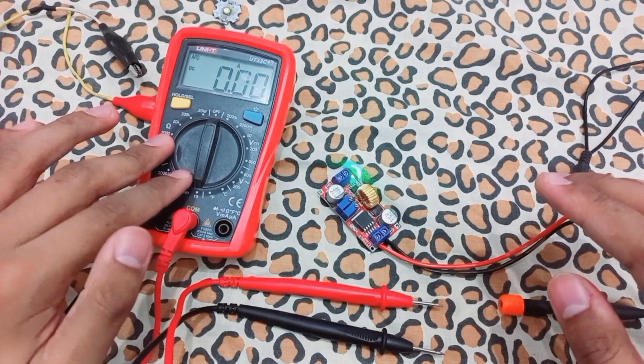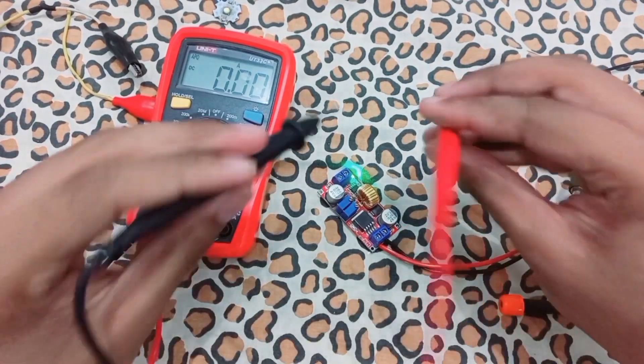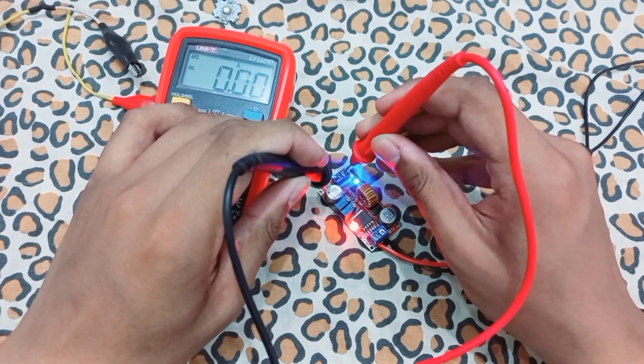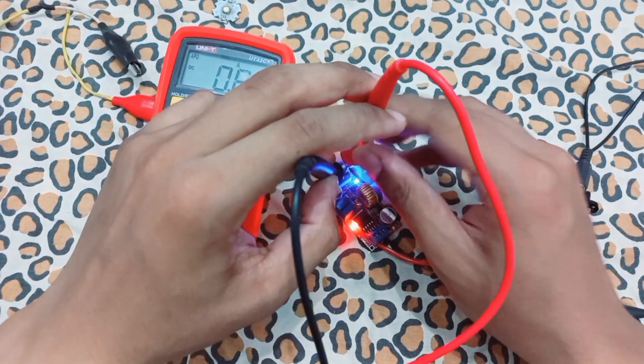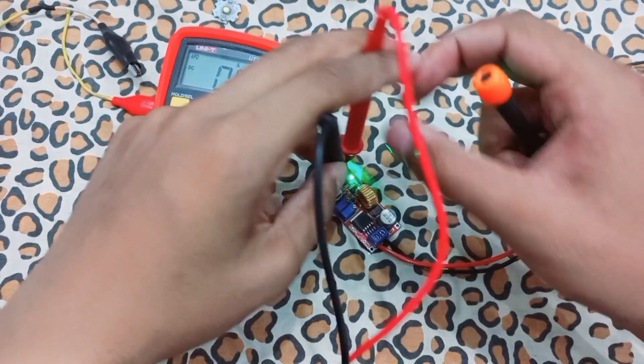Now the multimeter was set to current mode. If we connect the probes to its output in current mode, you can see that LED blinks. Now it's set on current mode.